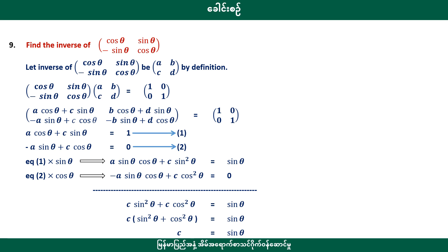We will find the inverse. Similarly, this gives C. If B gets its value, then minus A. That will give the equations: A cos δ plus C sin δ equals 1, equation one. Minus A sin δ plus C cos δ equals 0, equation two.